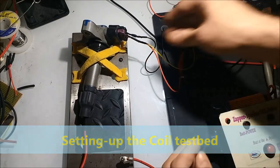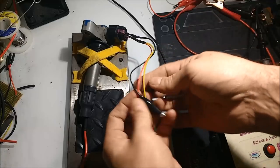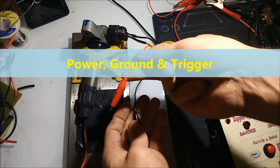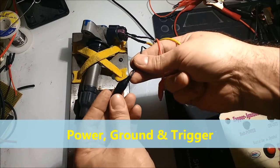The first thing we're going to do is set up the coil on our test bed, which is a metal base that comes with the Zapper ignition coil tester.